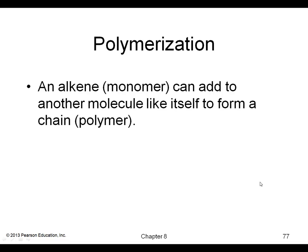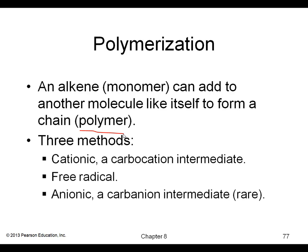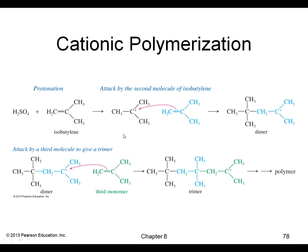Lastly, alkenes can undergo polymerization to form polymers. There are three ways to make polymers: cationic, free radical, and anionic polymerizations. Cationic polymerization involves carbocations: we take an alkene and react it with an acid to start generating the polymerization, where more and more isobutylene units add on to each other until eventually you get a long chain.